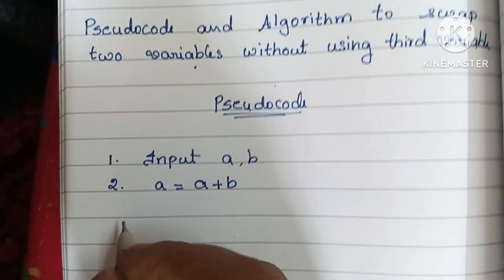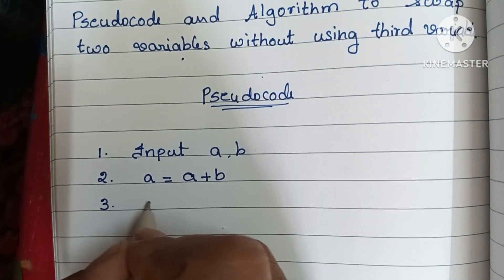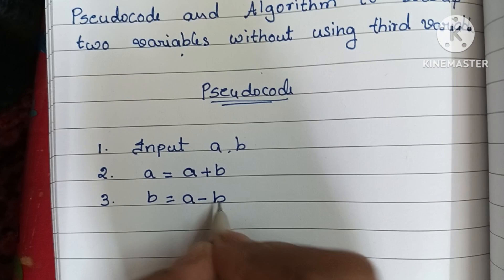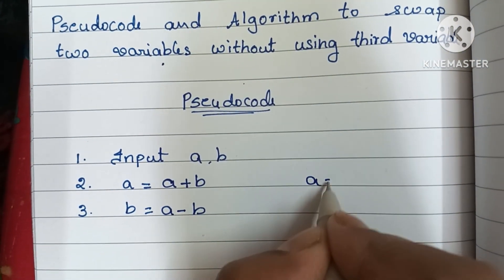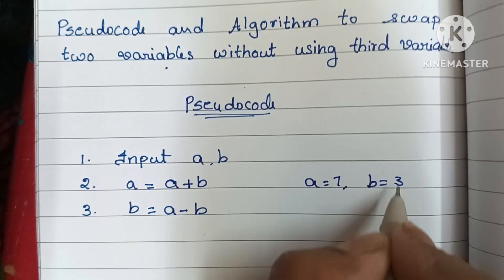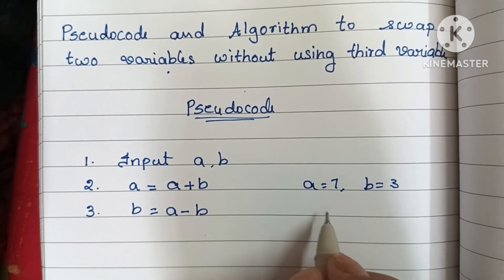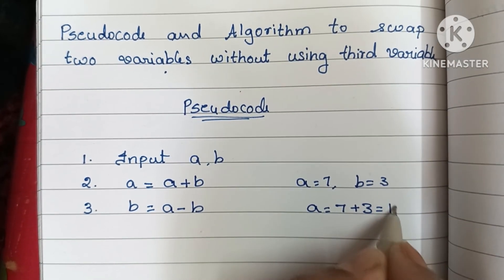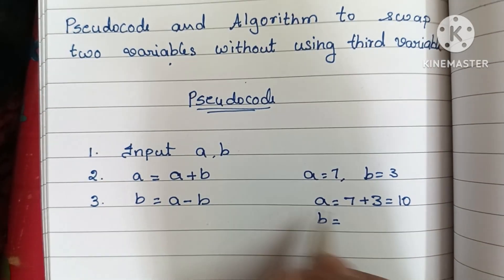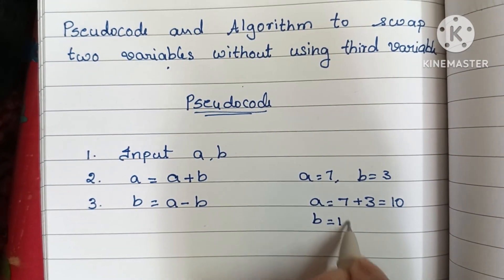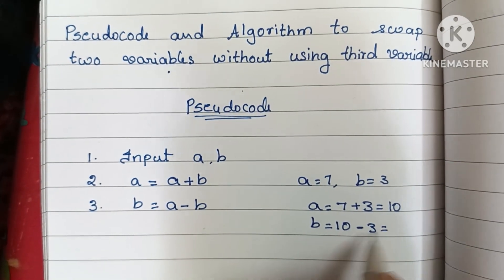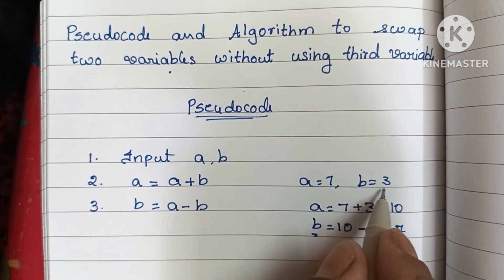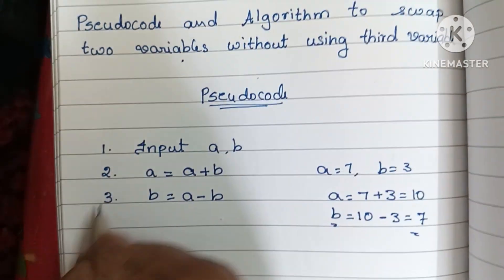Next, we find the new value of b using a minus b. Consider a equals 7 and b equals 3. First, a is updated to a plus b, which is 7 plus 3 equals 10. Then b is updated to a minus b, which is 10 minus 3 equals 7. So b now holds 7.